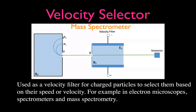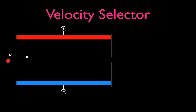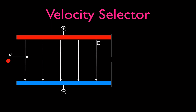Now let's talk about how we build up our velocity selector. We start with two charged plates — a positively charged plate and a negatively charged plate. This gives us an electric field that travels from the positive plate to the negative plate. The charged particles from the ion source have a positive charge and a range of velocities. When they enter that electric field, they're going to be deflected and accelerated downwards on a parabolic path, because the only force acting on them is the electric force.